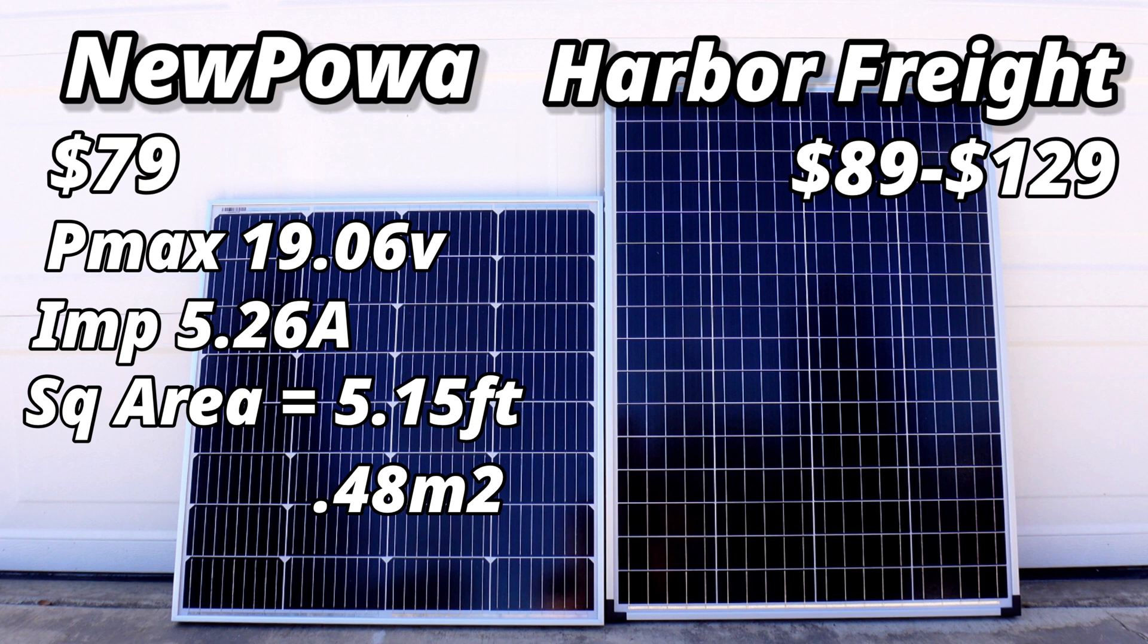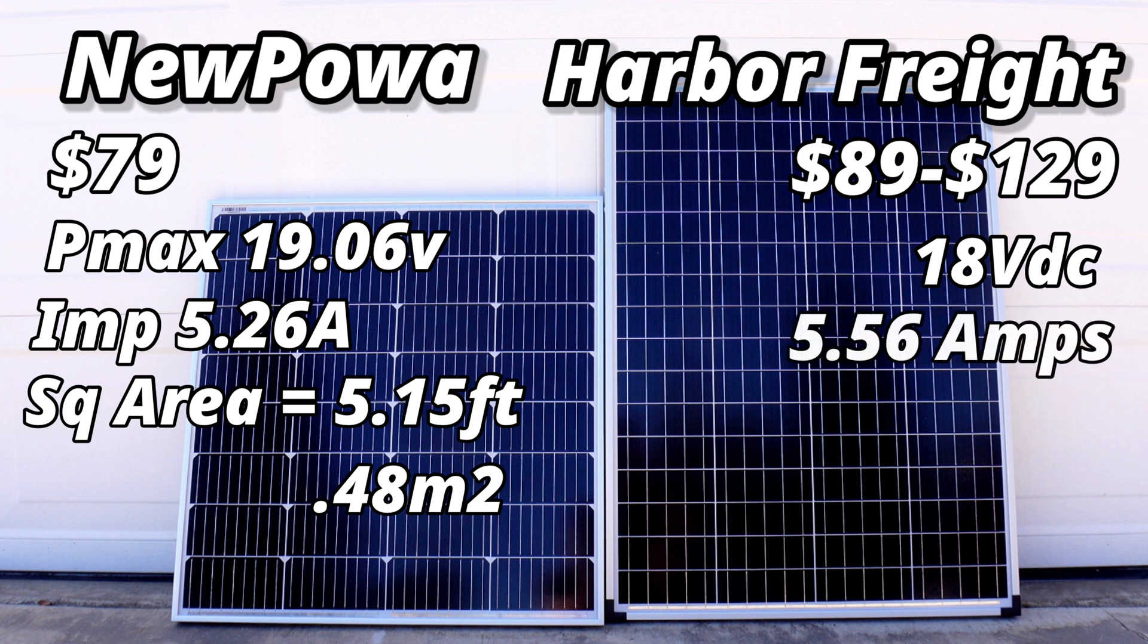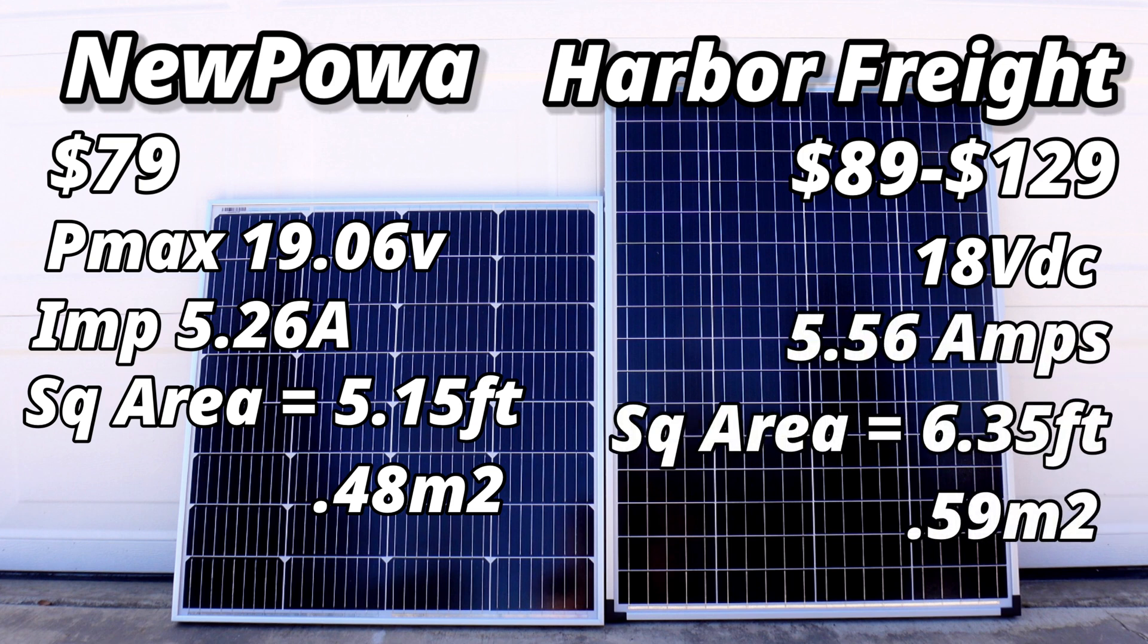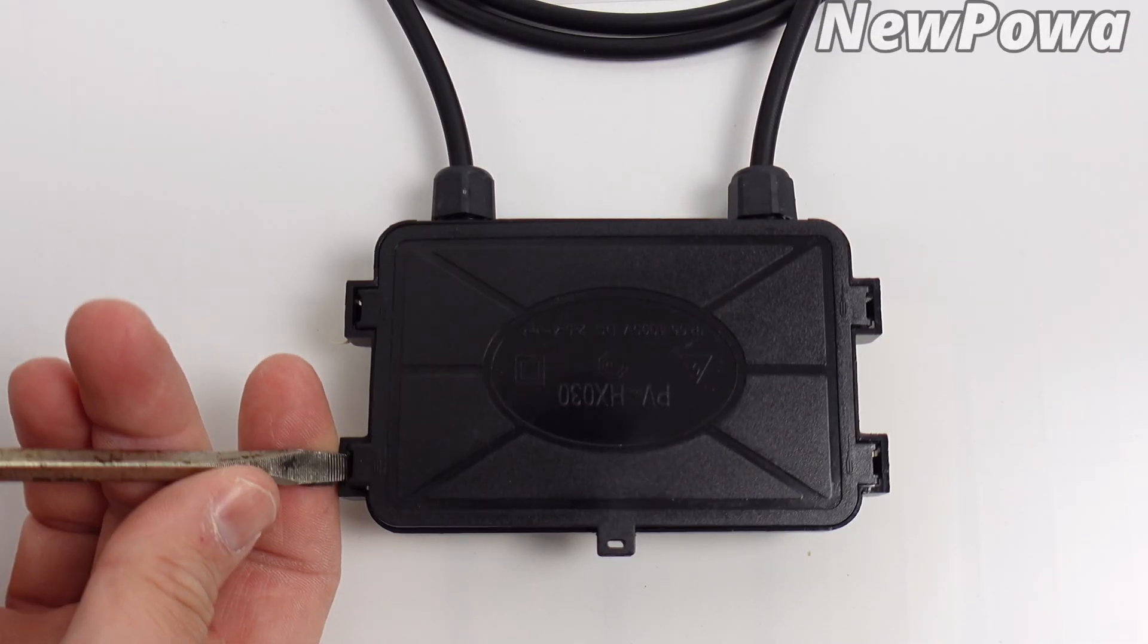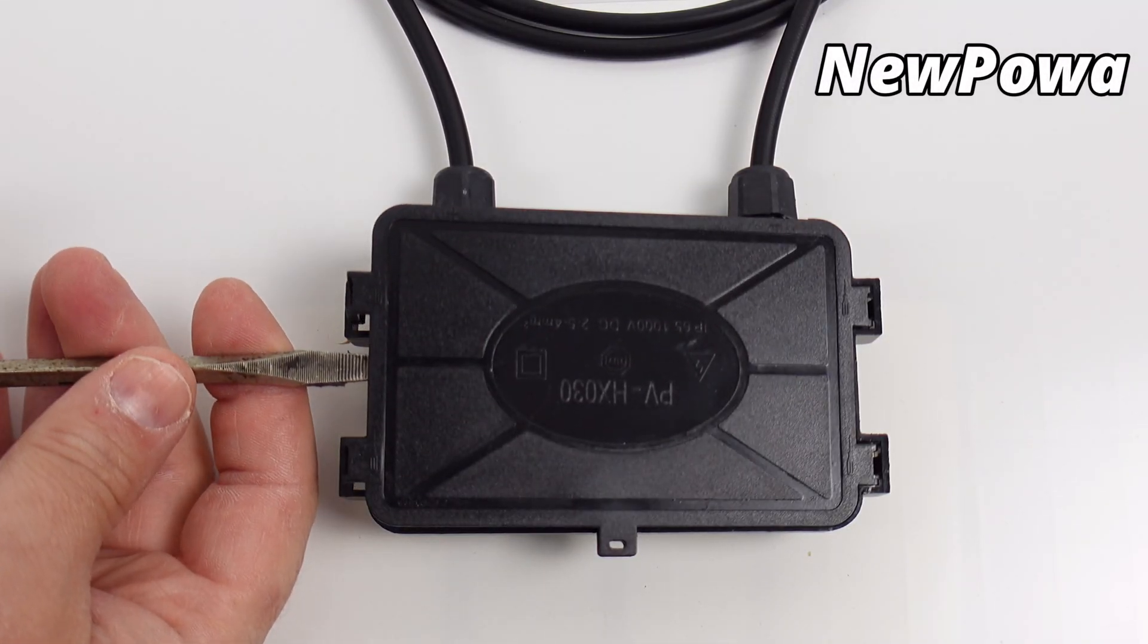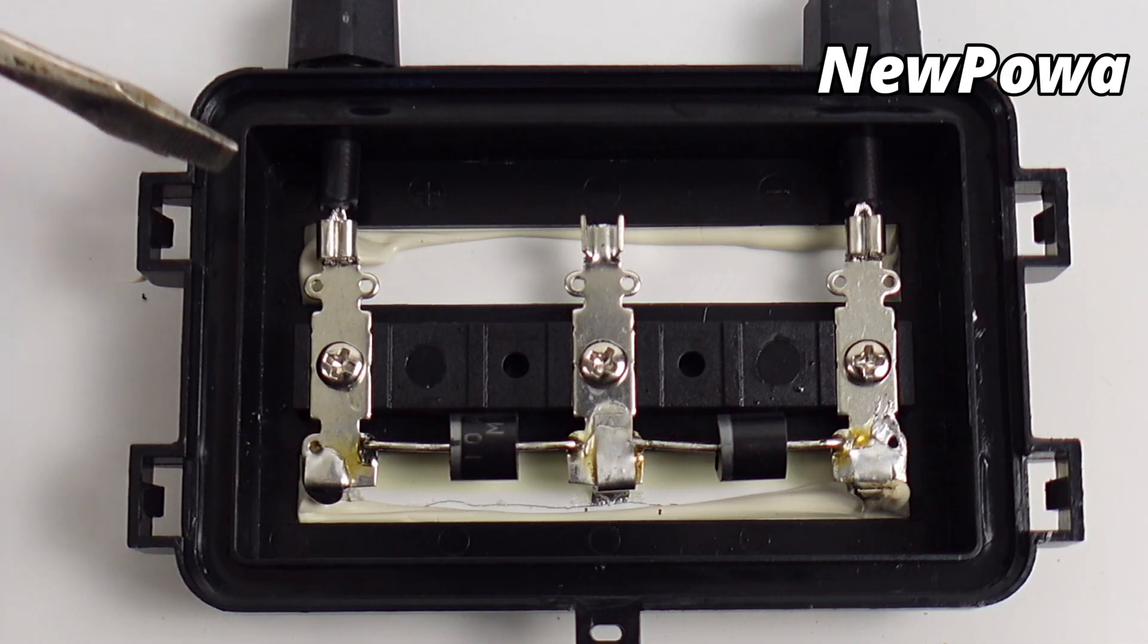The Harbor Freight solar panel comes in between $89 and $129 depending on when you pick it up and if you get a super coupon. It doesn't give much information except 18 volts, 5.56 amps, and a square area of this one measures 6.35 feet or 0.59 meters.